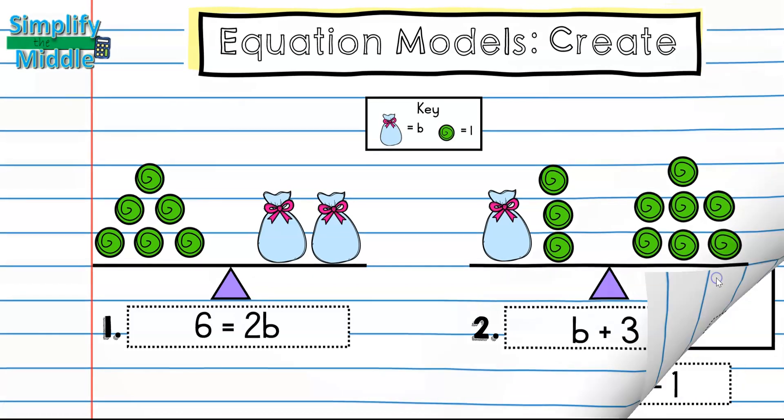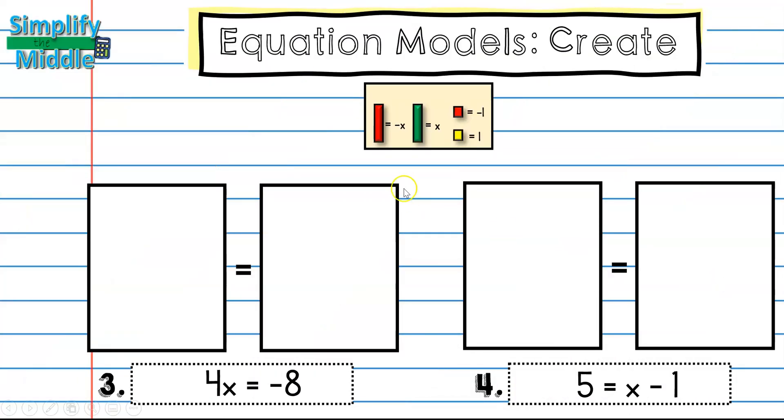Let's try a couple more. Here I have my algebra tiles again. And I'm going to be using this to represent x. So I have 4x. So I should have 4 of the green tiles over here. And over here, I have negative 8. And we know that a negative constant is this small red tile, which I'm going to place 8 of them over here.